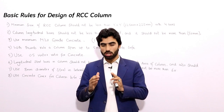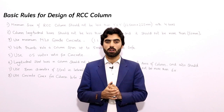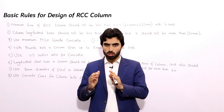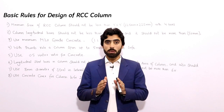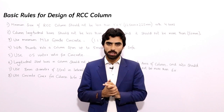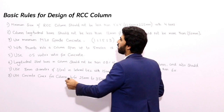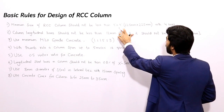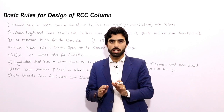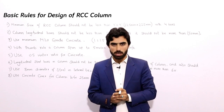Design of an RCC column depends on the structural load. The first rule: many students ask about the minimum size of an RCC column. While size depends on structural load, the minimum size of an RCC column should not be less than 9 by 9 inches, or 225 mm by 225 mm, with a minimum of four numbers of steel bars.